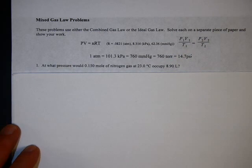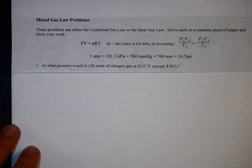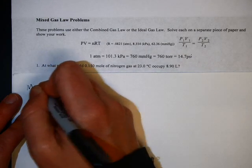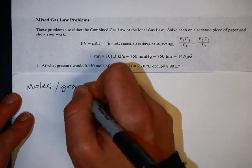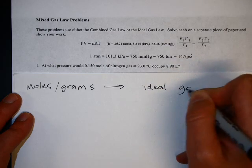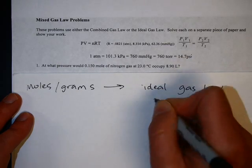When you do these problems, the first thing you look for is: does the problem talk about moles or grams? If it mentions moles or grams, whether given or you're trying to solve for them, then you're going to use the ideal gas law, which is PV equals NRT.